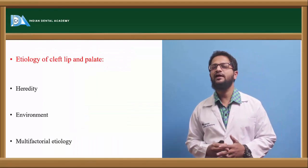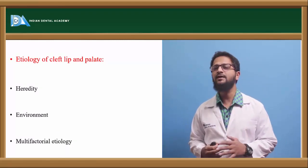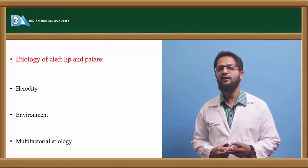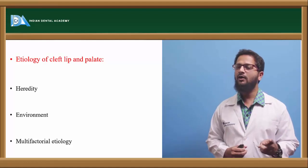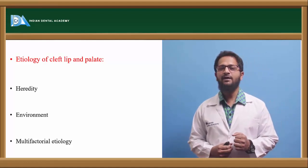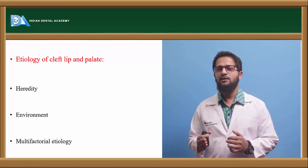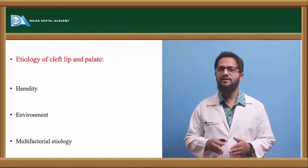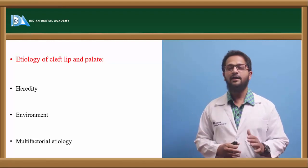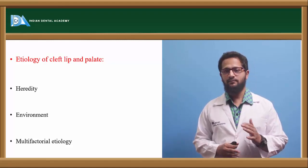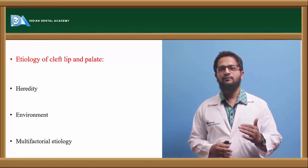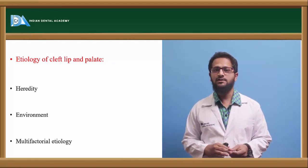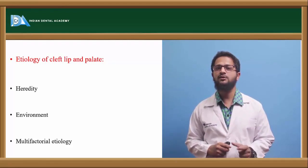Now, coming to the etiology of cleft lip and cleft palate — how cleft lip and palate actually occurs. There are three main factors responsible: heredity, environment, or multifactorial. Cleft lip and palate has a lot of chances to be inherited from parents to children; they can be transmitted both as recessive as well as dominant traits. Regarding environment, there are certain agents called teratogens — this phenomenon is called teratogenesis — which result in the occurrence of clefts in children.